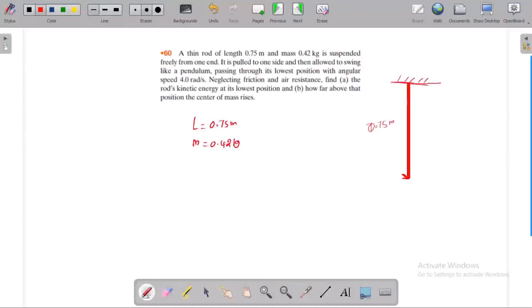It is pulled to one side and allowed to swing like a pendulum. The rod is placed like this on one side and released like a pendulum which is oscillating.